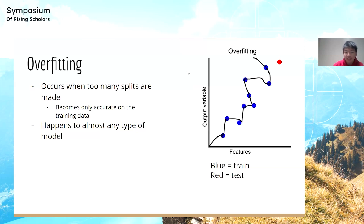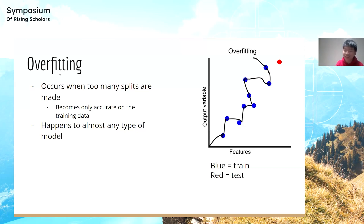A problem with decision trees is that they're simple and prone to overfitting, which occurs when too many splits are made. The model becomes accurate only on training data. For example, if training data only covered cats and dogs, the model might ask questions like 'what color is your left front paw?' — a bad question for animals without claws. Similarly, in linear regression, the line of best fit becomes overly squiggly and can't predict on new test data.